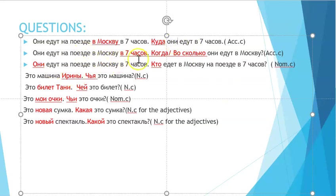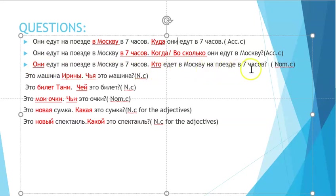To ask about the time 'в семь часов', in Russian you use 'когда' (when) generically, or 'во сколько' (at what time) for precision. To ask about the pronoun 'они', the question is 'кто едет в Москву на поезде в семь часов?' Note that 'кто' is always singular, so the verb is conjugated in singular form — 'кто едет.'